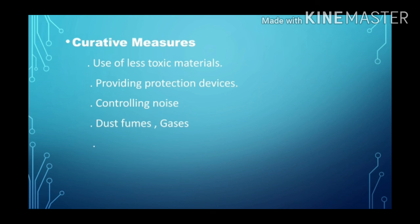So here we discussed the protection against health hazards. There are two types of measures that can be taken to protect employee health against occupational hazards. The preventive measures are: pre-employment and periodical medical examination, removal of health hazards to the maximum possible extent, check over women and other workers exposed to special risk, training to first aid staff, and educating workers in health and hygiene.